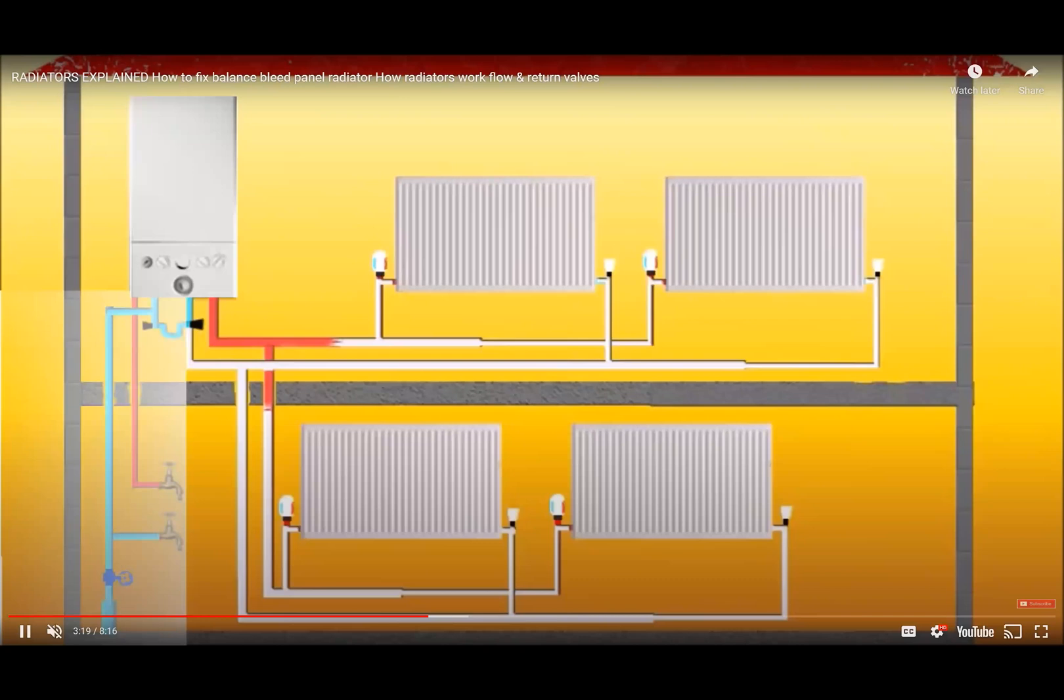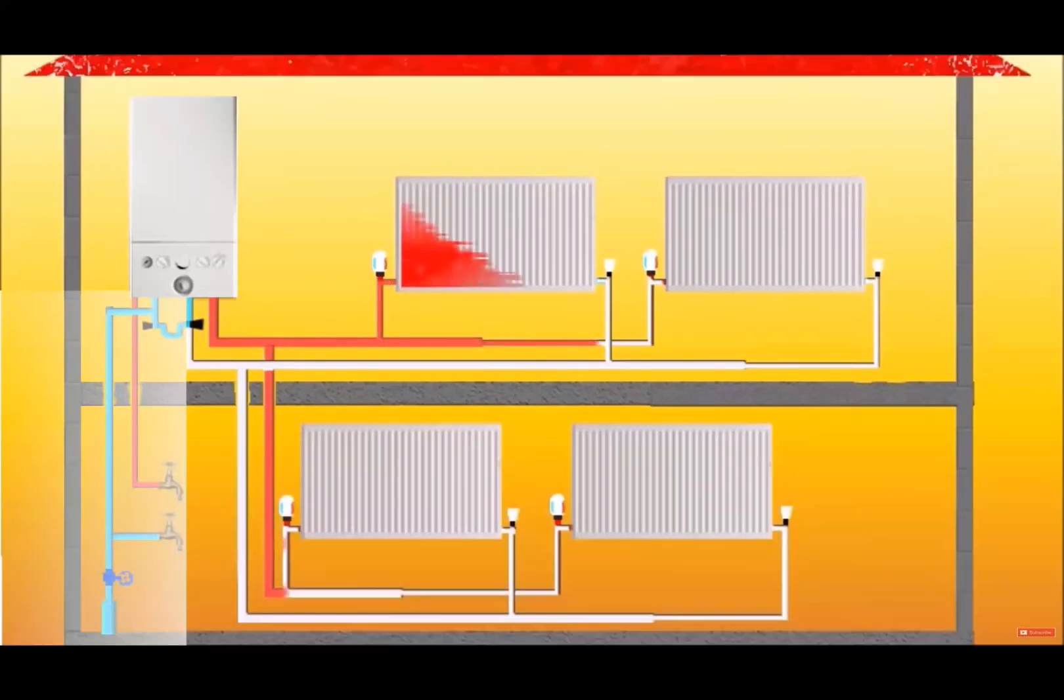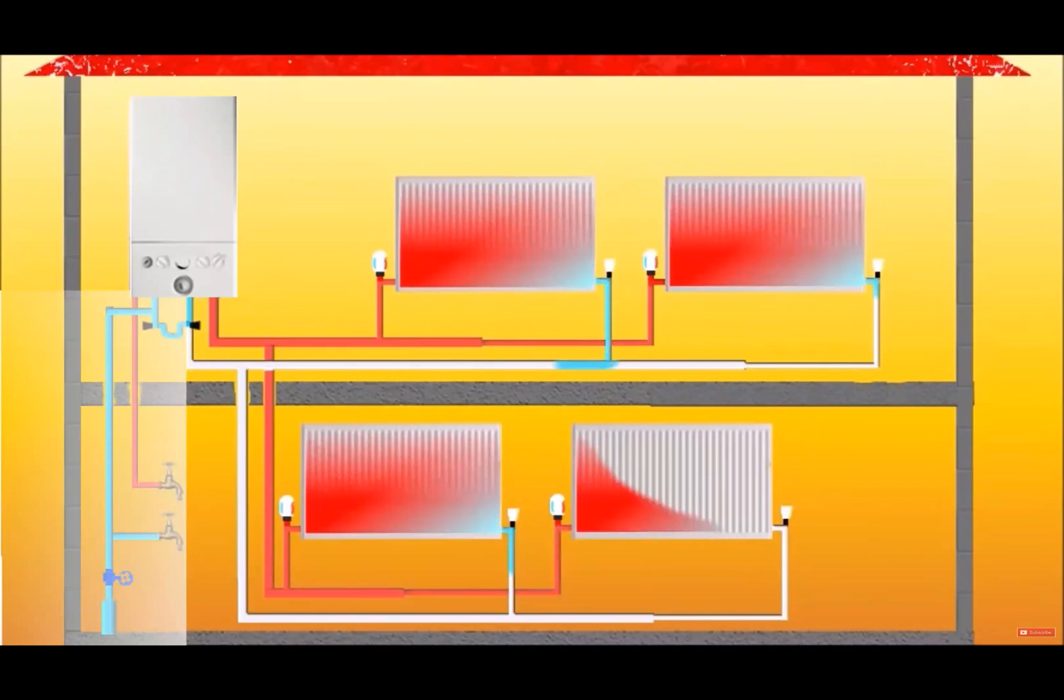First, to look at some of the older systems, as you can see, the hot steam is entering the radiator, heating up the radiator, and then the steam is being condensed back into water and sent back to the boiler.